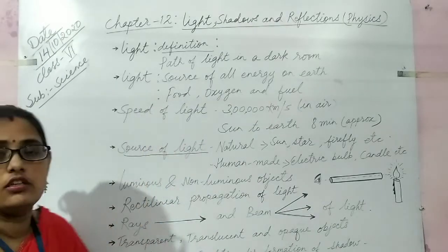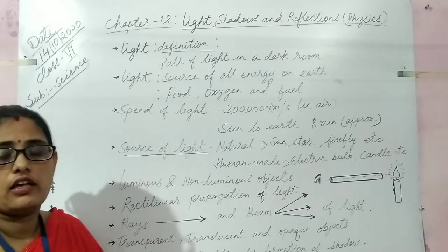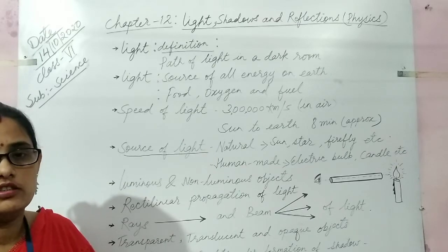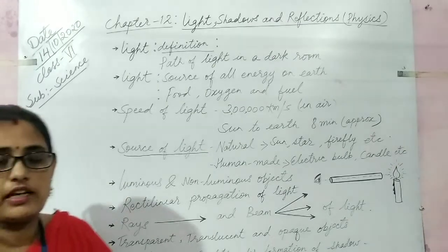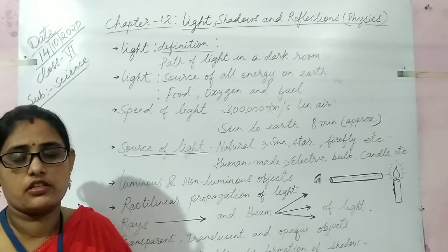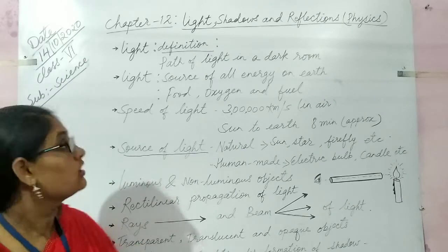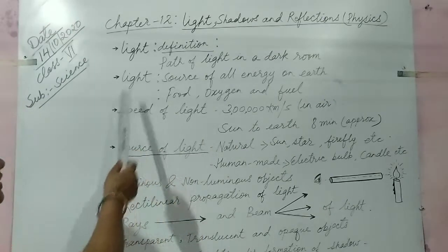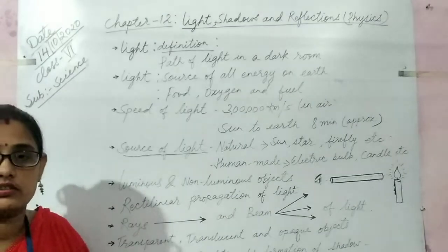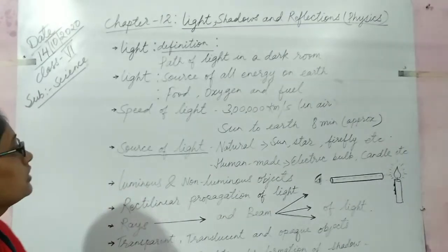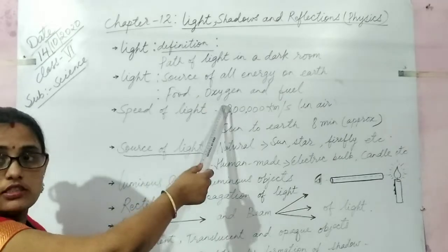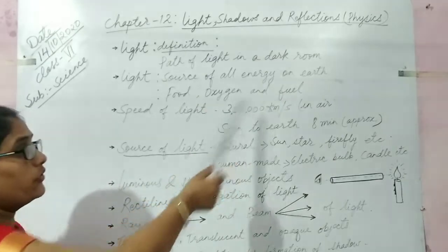First of all, I will explain to you about the definition of light. What is light? Light is a form of energy which is very essential for life on earth. Light is actually the source of all energy on the earth — it provides us food, oxygen and fuel.